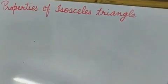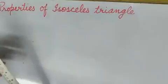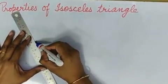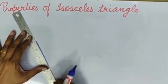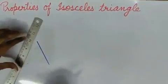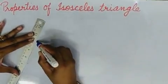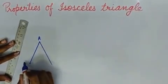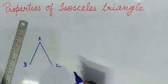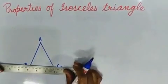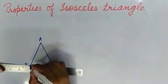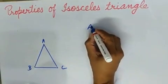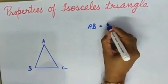For that, first of all we will draw an isosceles triangle. Isosceles triangle means two sides should be equal. Suppose ABC is an isosceles triangle where AB is equal to AC.